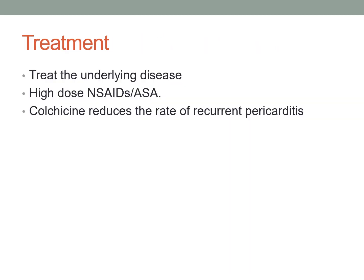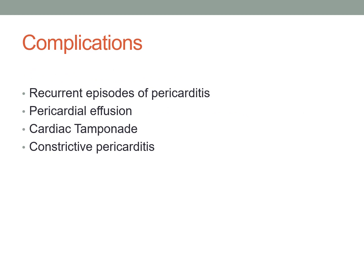Treatment of pericarditis is to treat the underlying disease. We can give high-dose NSAIDs to reduce inflammation. Colchicine is advisable for recurrent pericarditis. Complications of pericarditis include recurrent episodes leading to constrictive pericarditis, pericardial effusion, and cardiac tamponade.